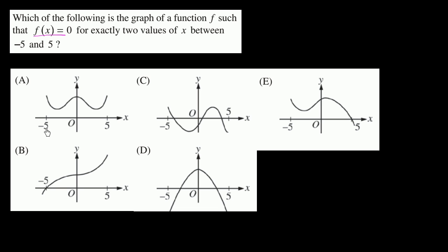Let's see. In all of them, they've plotted where x equals negative 5 and x equals 5. So f of x needs to be equal to 0 for two values of x between negative 5 and 5.